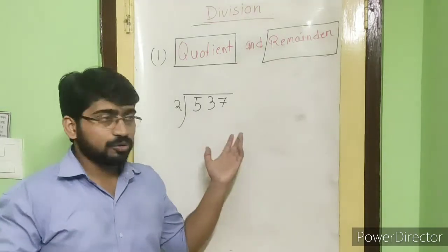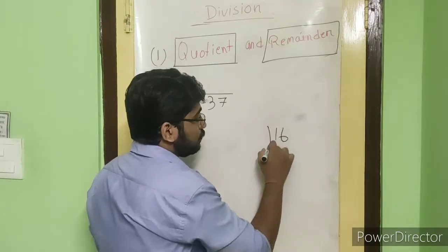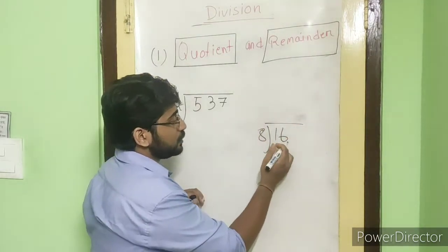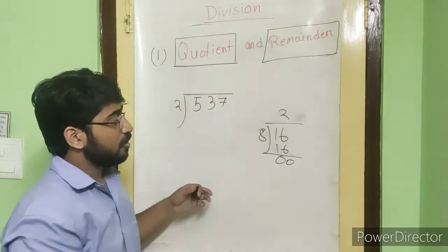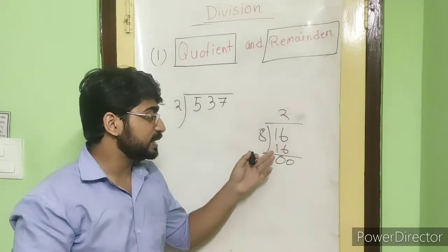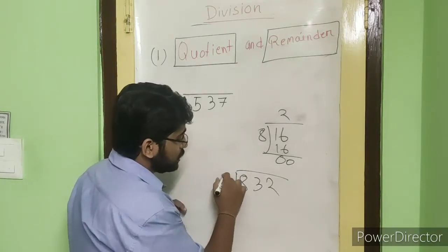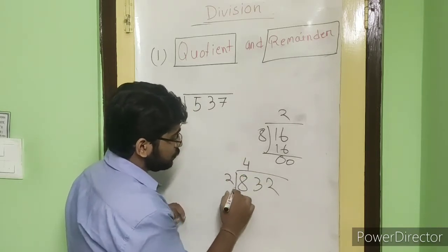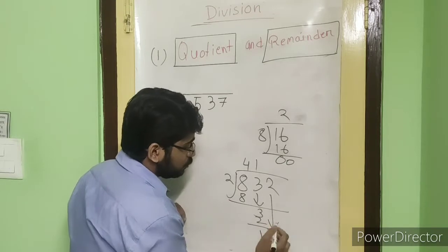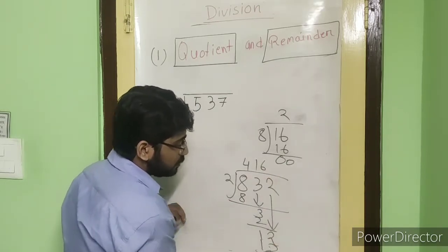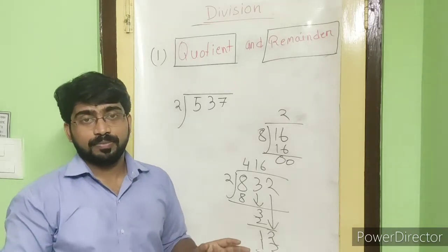I will show you an example. In our previous maths, suppose we divide 16 by 8 — 8 into 2 gives 16, and 16 minus 16 gives 0. Or take 832 divided by 2: two fours are eight, two ones are two, two sixes are twelve — at last we always found zero.